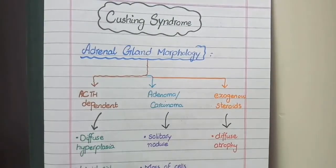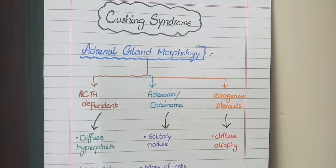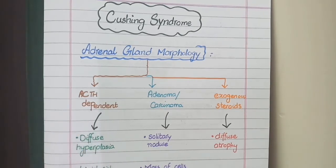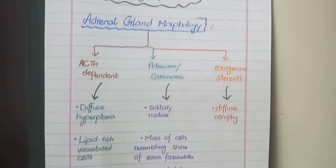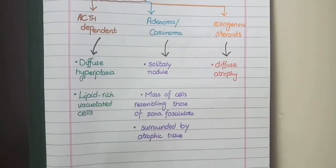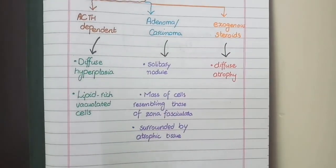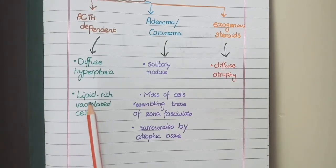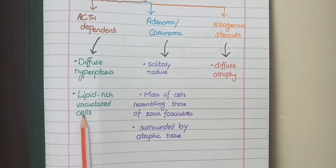The morphology of the adrenal glands in Cushing syndrome also depends upon the underlying cause. If Cushing syndrome is secondary to ACTH, then ACTH will cause diffuse hyperplasia of the adrenal glands. As adrenal glands require cholesterol to produce steroid hormones, accumulation of cholesterol results in a vacuolated appearance of cells, because lipids do not get stained.